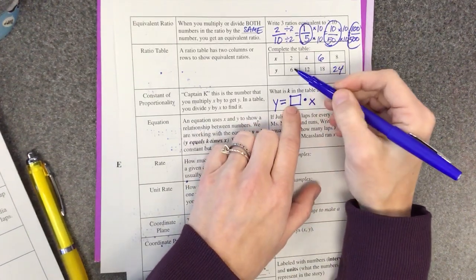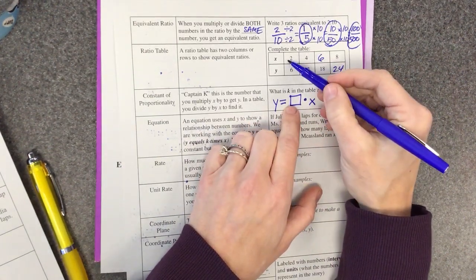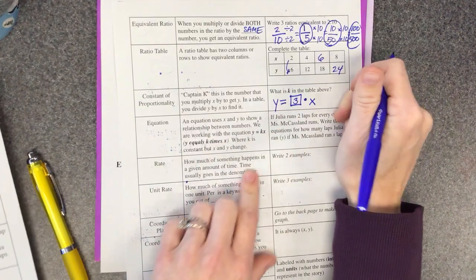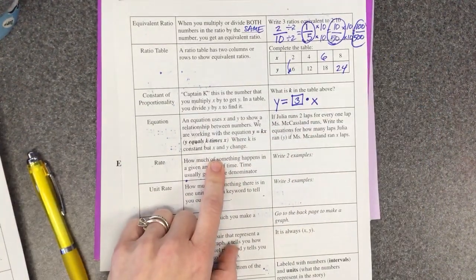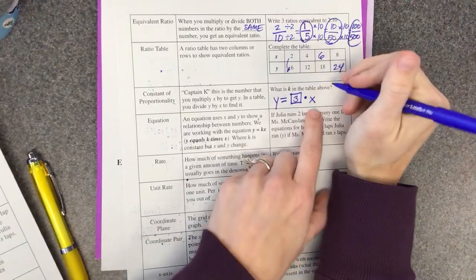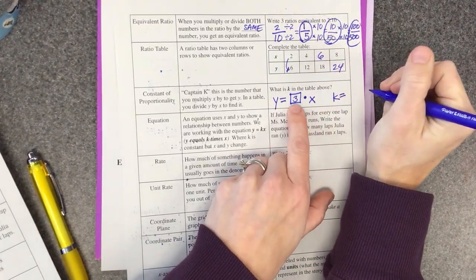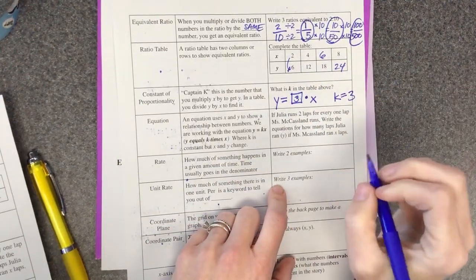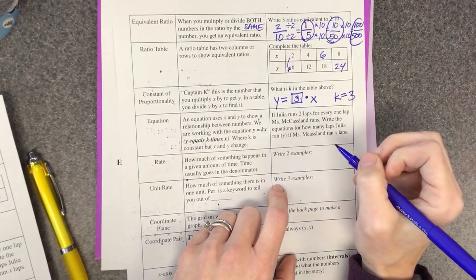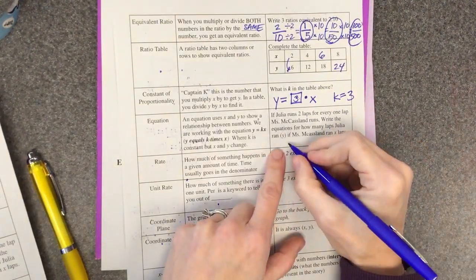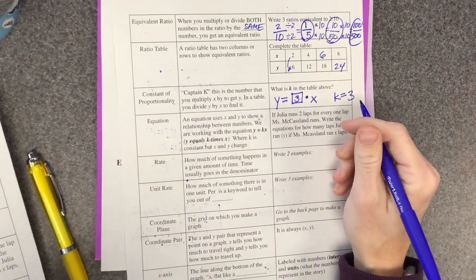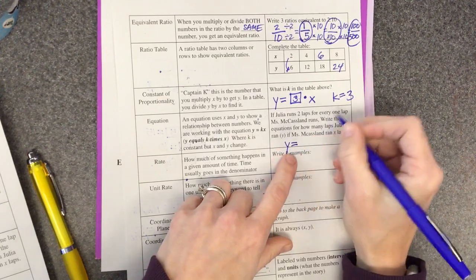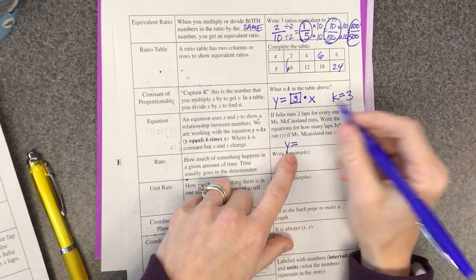Okay, let's go. So we're gonna write right here k equals what was the number we wrote, three, three. So Captain k is three, and yeah. Okay, now Miss McCaslin can run, good for her. All right, y equals how many laps can she run? Two, two, that's Captain k, two times x. That's it, does it seem a little bit easier? Yeah, I hope so.